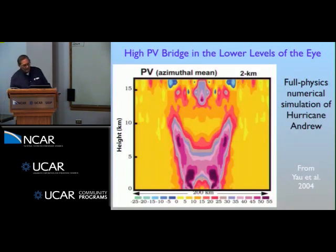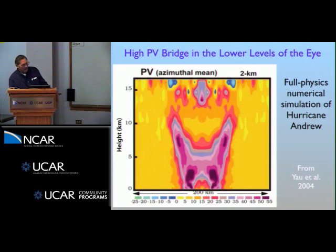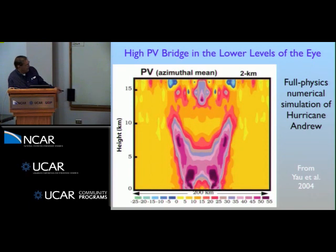This was motivated by a diagram from Yao et al. 2004, a series of papers on Hurricane Andrew modeled with MM5. They presented a cross-section of potential vorticity: 200 kilometers across, with the center of the vortex in the middle, going up to the tropopause. There's really high PV on each side and a tower of PV rising up, plus a high PV bridge across the eye.